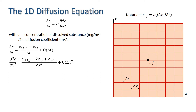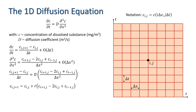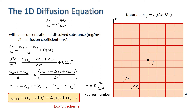We can generate a numerical solution by substituting these approximations into the diffusion equation, which rearranges to: c_ij+1 = c_ij + r·(c_{i+1,j} − 2·c_ij + c_{i-1,j}), where r is a dimensionless parameter known as the Fourier number.